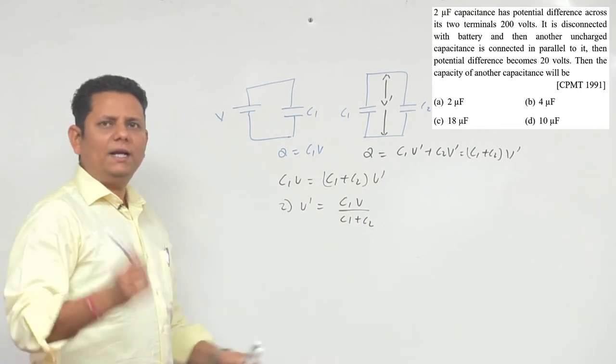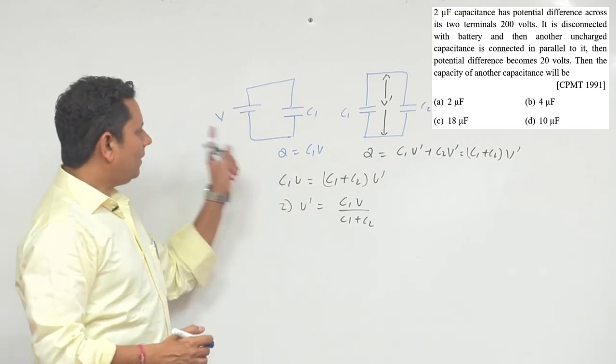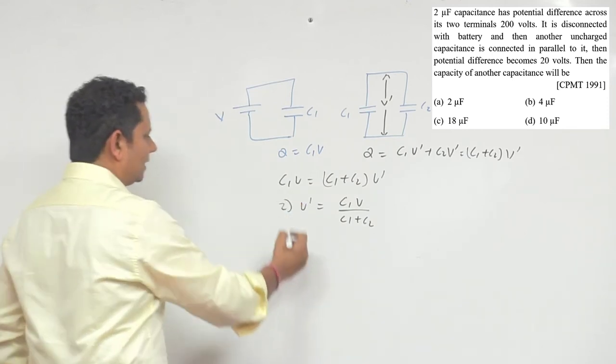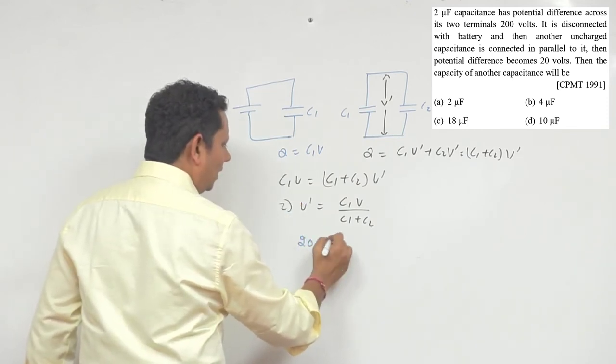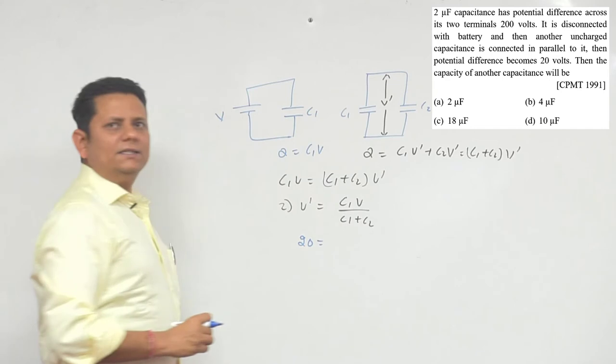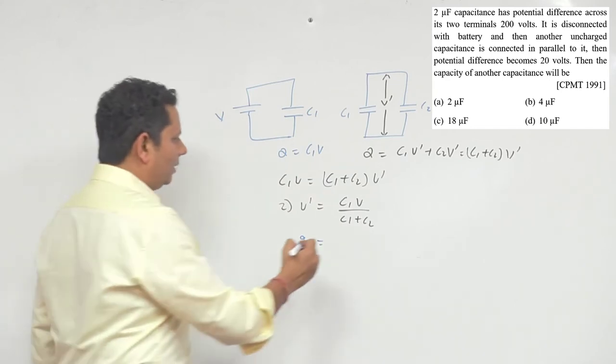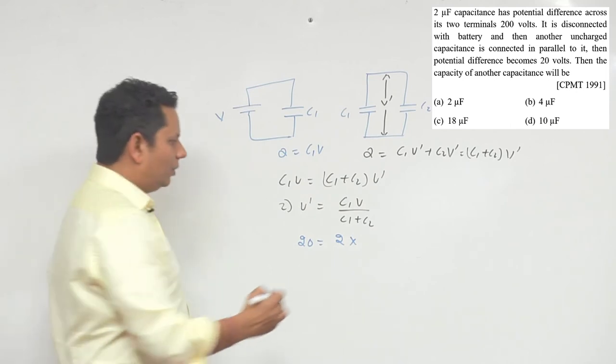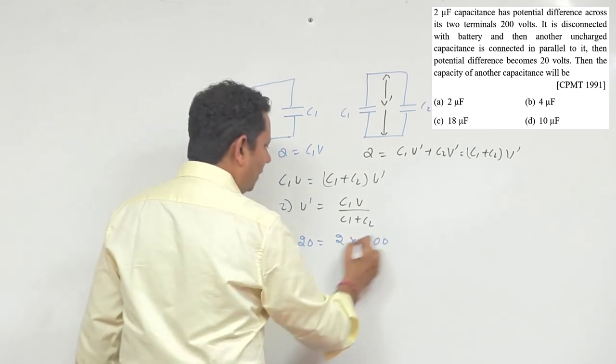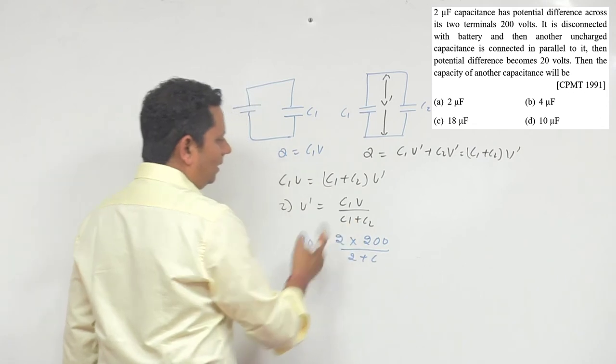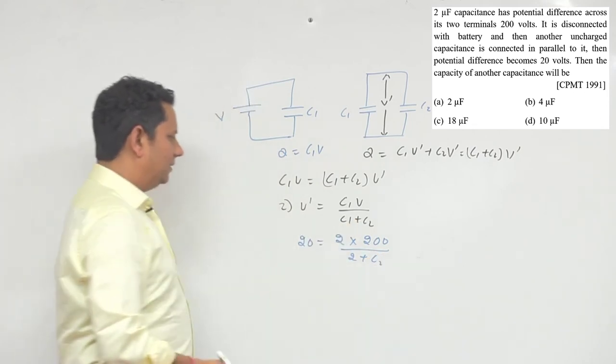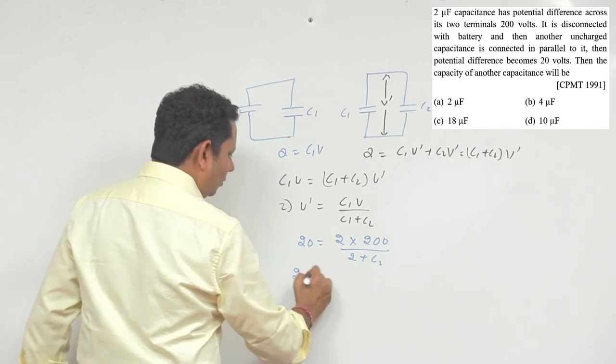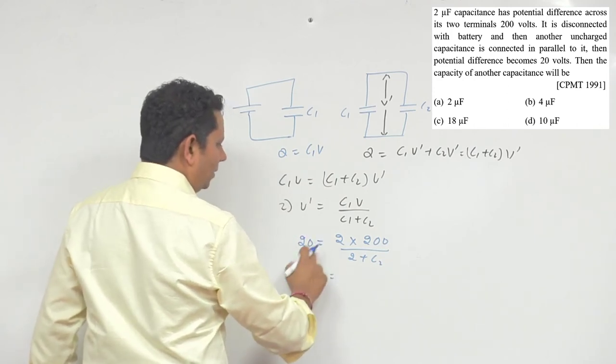You can directly remember this formula. In this case, the data given can be directly used. The final potential that we got is 20 volts. The capacitances given: the first capacitor is 2 microfarad which was charged at 200 volts, divided by 2 plus C2. We need to find this value. So simply, we can solve this: 20 goes to the other side, so 2 plus C2 will equal...